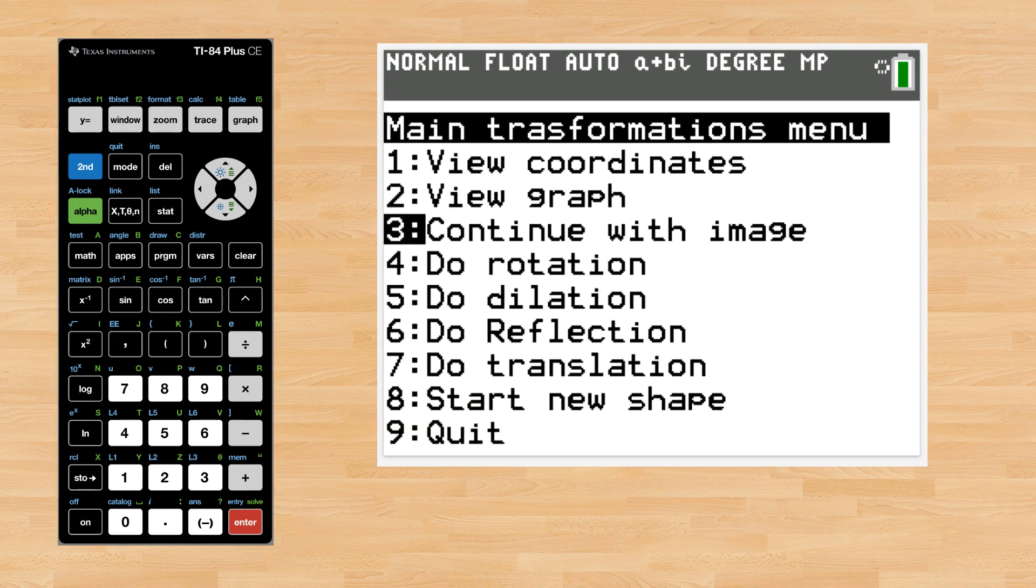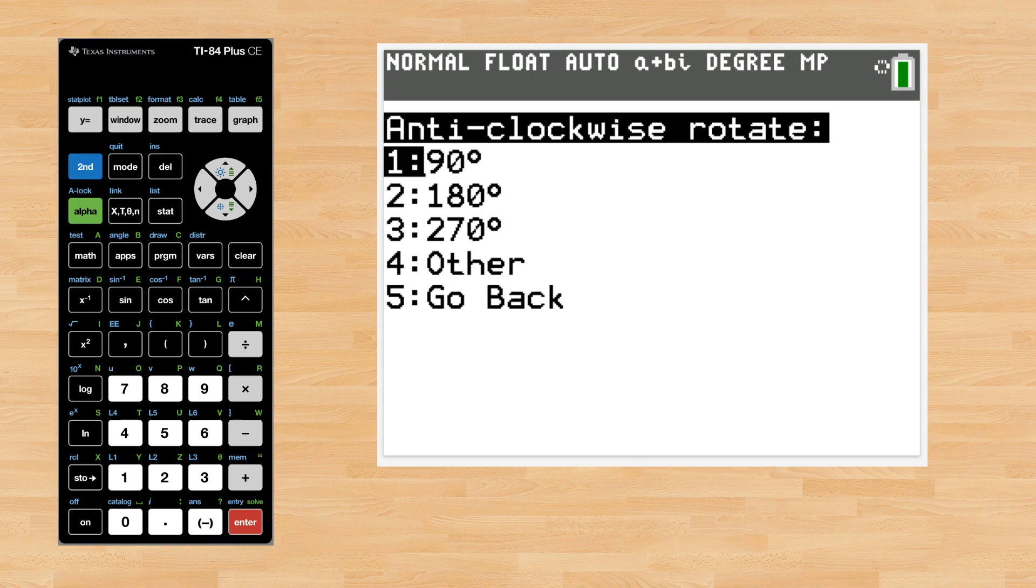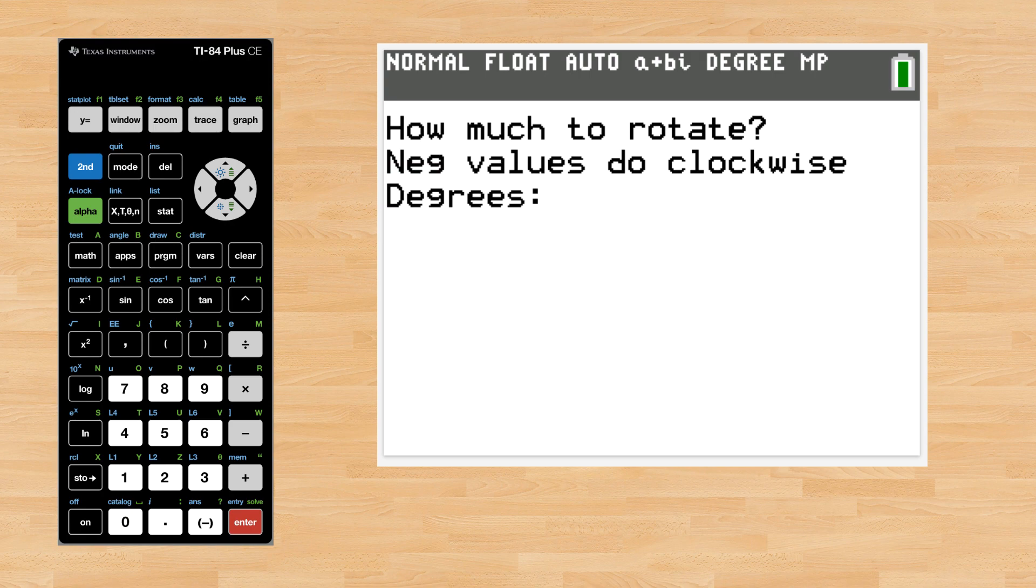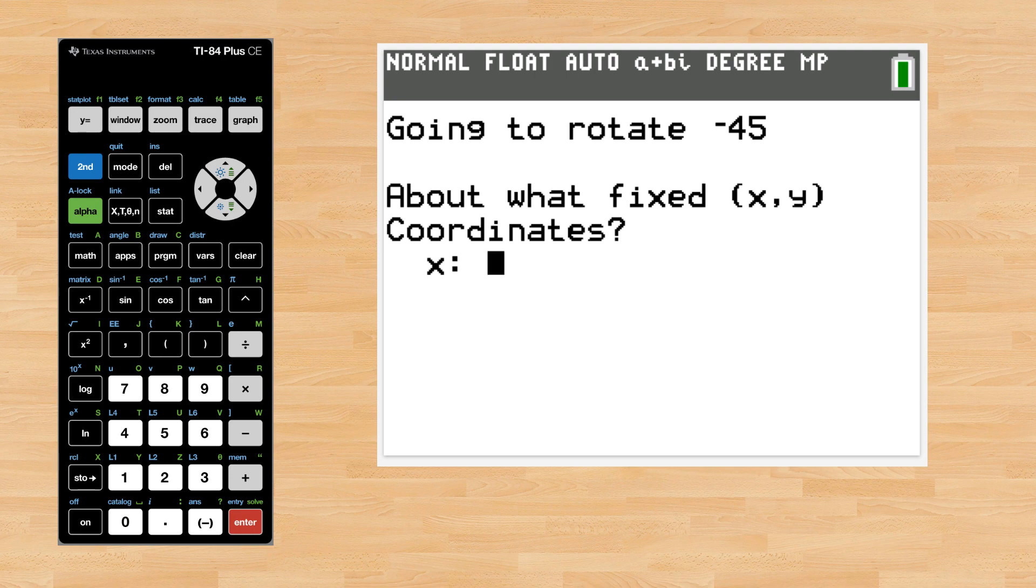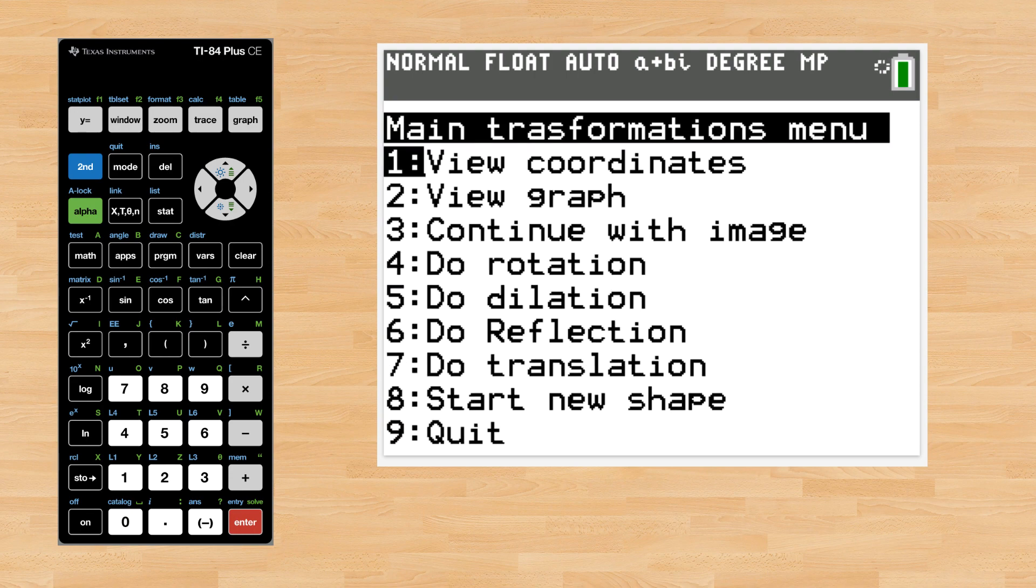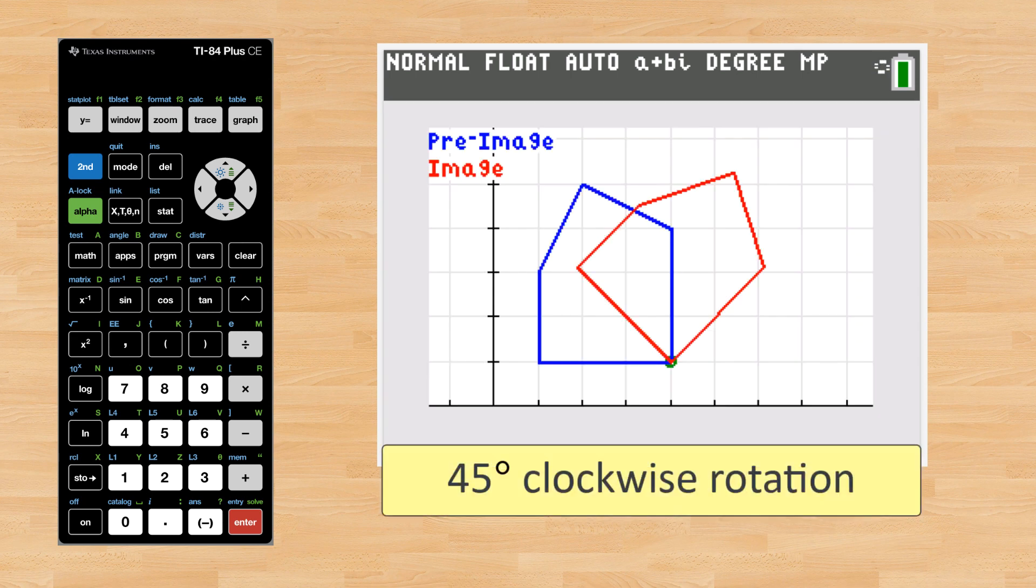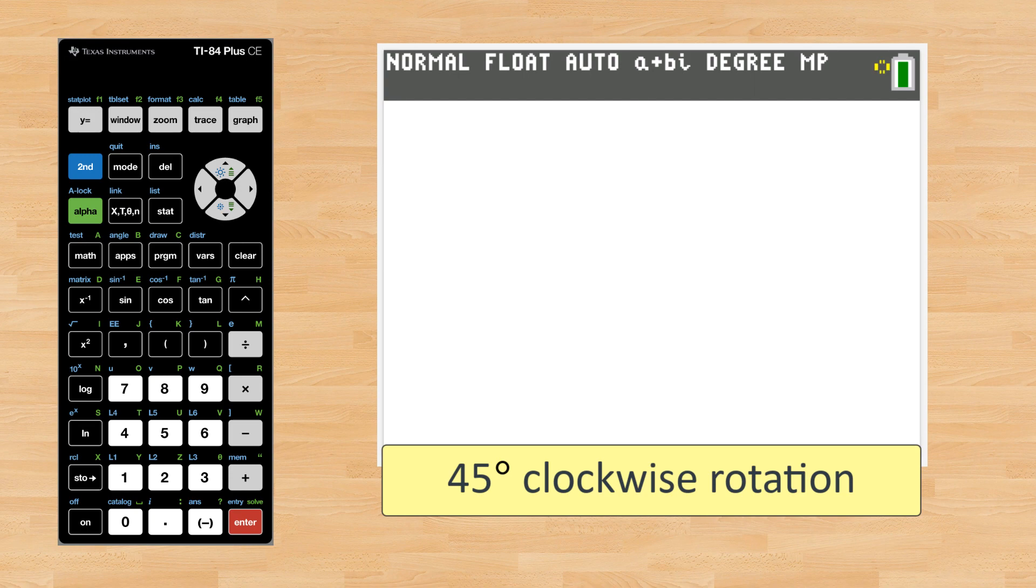A clockwise rotation can be done by choosing number four, the other option, and entering a negative angle. Be sure to use the negative symbol key not the minus symbol key when entering a negative value. Let's try negative 45 degrees and the center of rotation will be 4, 1. And here are the coordinates of the resulting image.